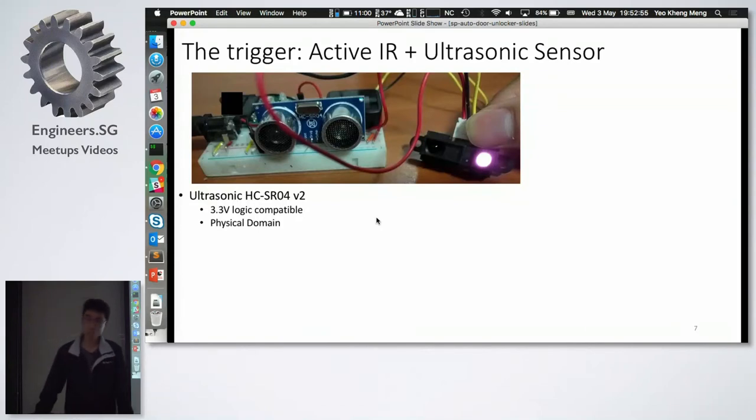Now it's about the trigger. So I use two sensors for this. The first sensor is an ultrasonic sensor. This is actually an HCSR04, this is version 2. What's so special about version 2 compared to version 1 is that this is actually 3.3 volt logic compatible. The version 1 is only 5 volt logic. This actually uses sound waves.